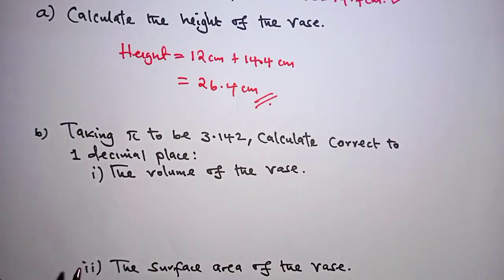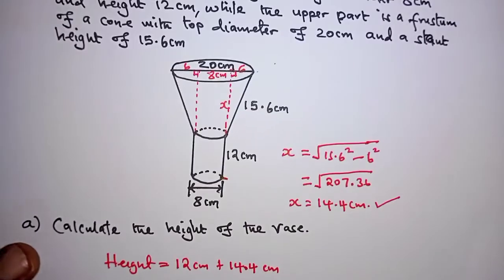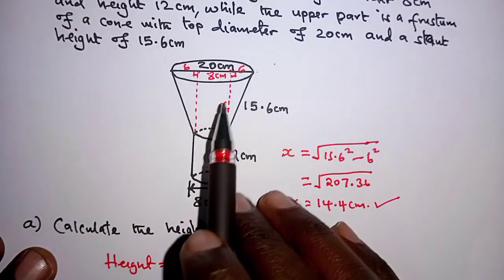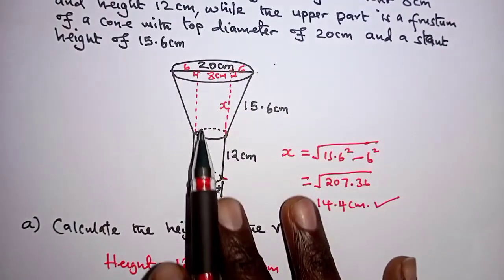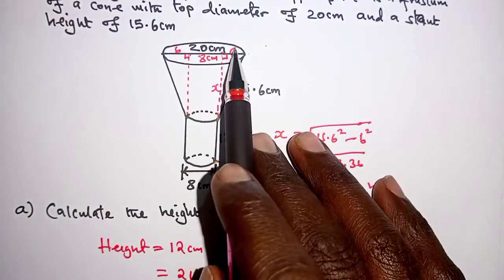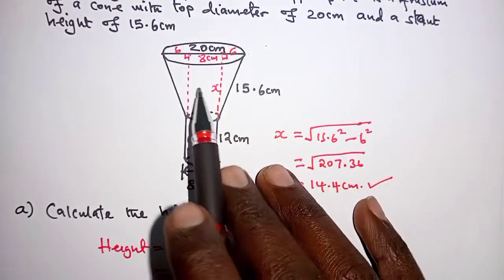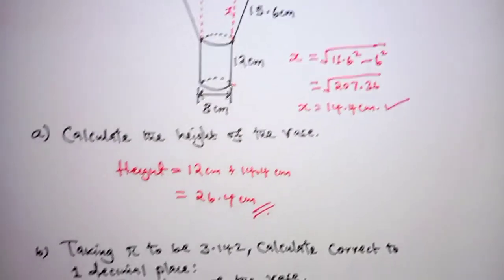Now, in order to determine the volume of the vase, we have the vase in two parts. We have the upper part is a frustum of a cone and the lower part is a cylinder. So, we will get the volume of the frustum plus the volume of the cylinder. Now,